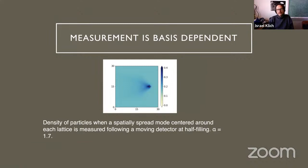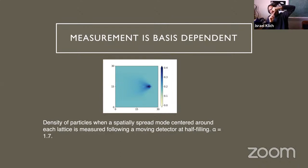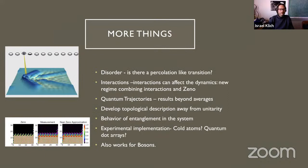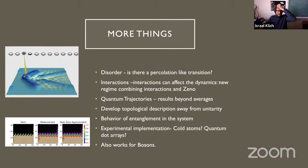The wake pattern also depends on the basis of measurement. Measuring the presence of a particle at a site at half filling gives no wake, but measuring a symmetric combination of a site and its neighbor — projecting onto a particular mode — can give a wake pattern. So measurement-basis choice matters for what wake pattern you observe.